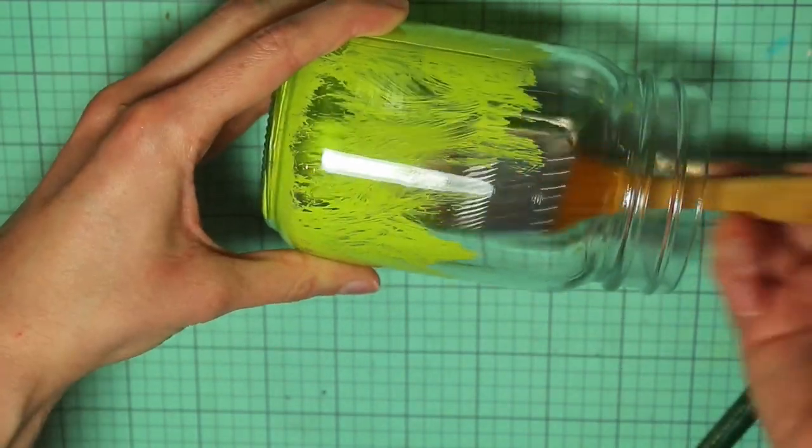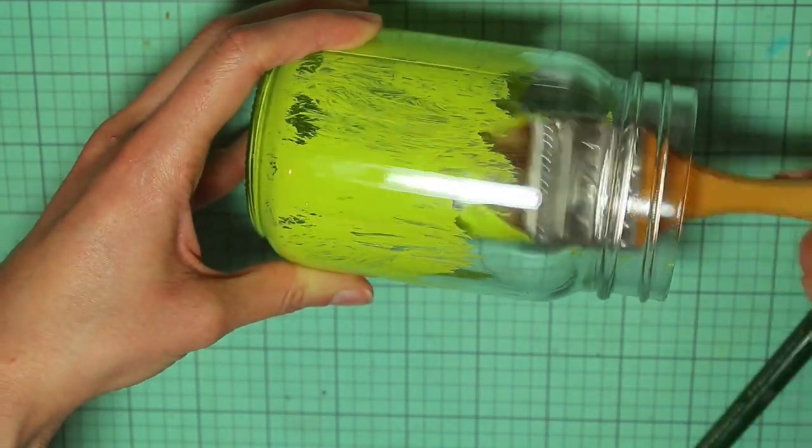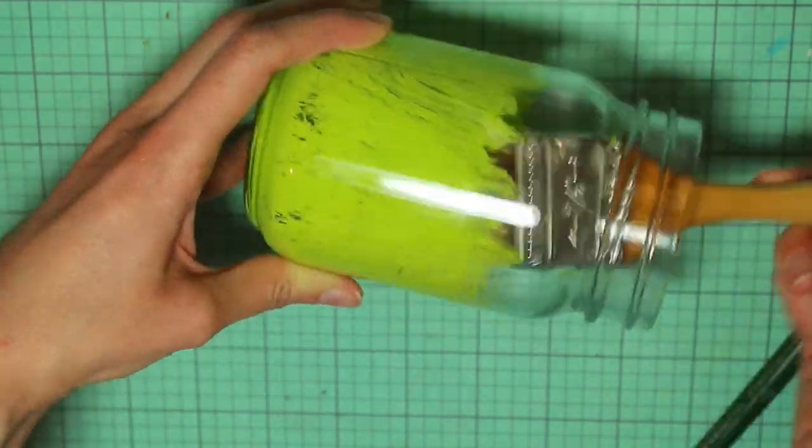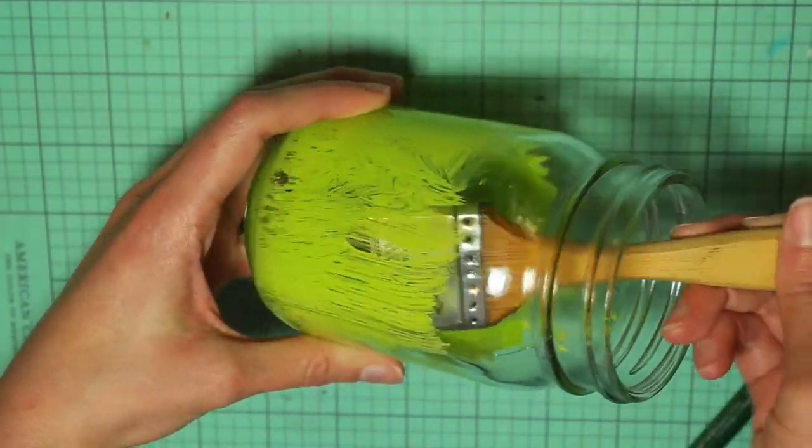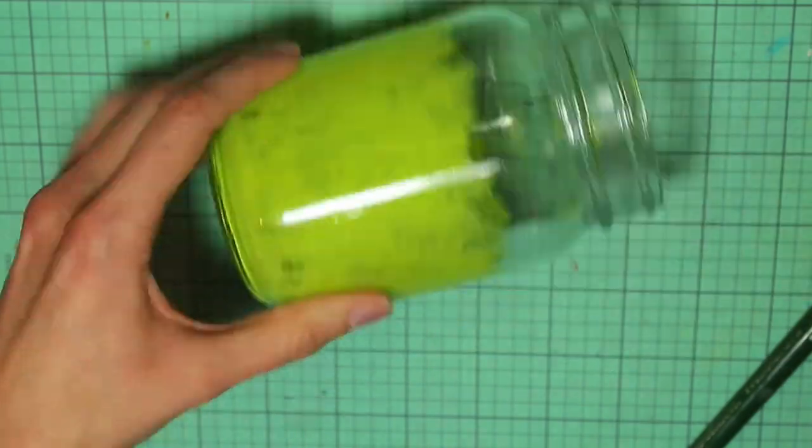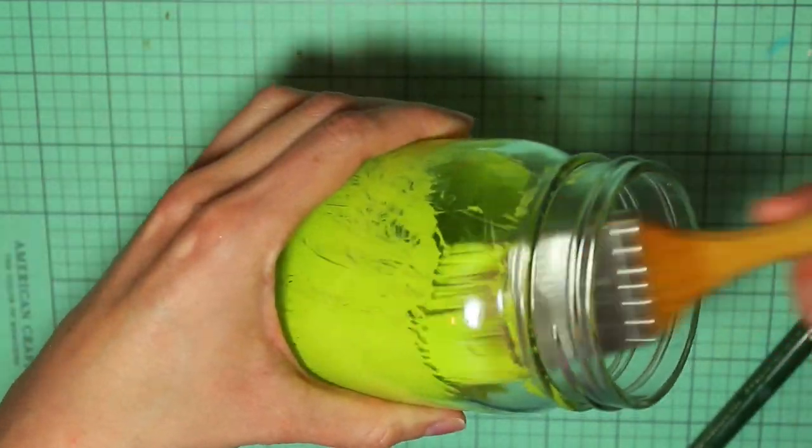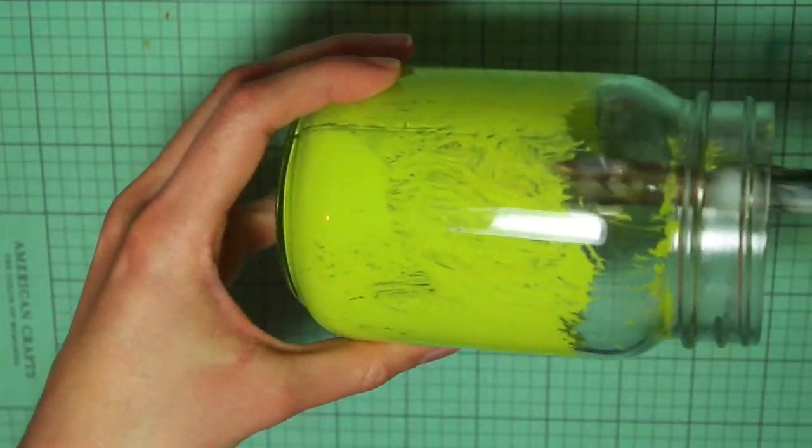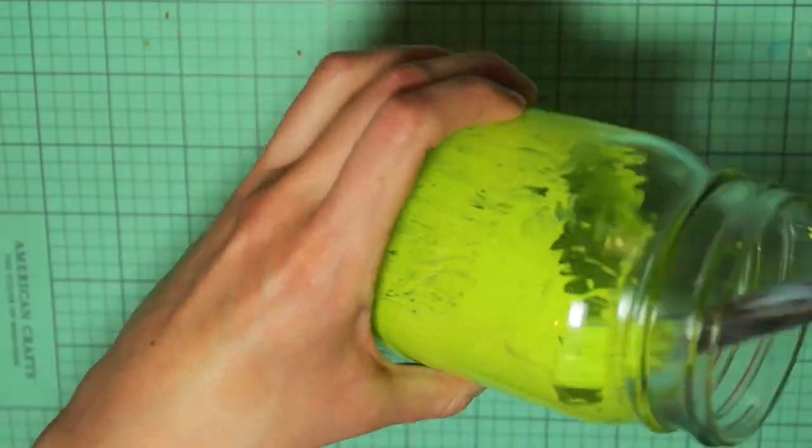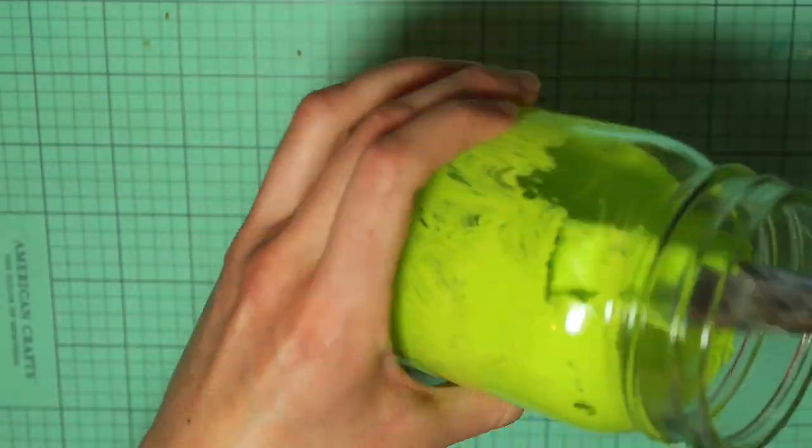And it works best if you don't try to drag the brush across the surface because it will kind of lift it off the glass. It's better if you just kind of dab it. And also you don't want this to be super opaque. It will be harder to see the leprechaun that way. So it's okay if you can see little areas where the light shines through.